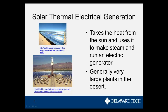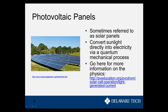Solar thermal power plants are generally only economical to build in the desert. Photovoltaic panels are a little different — they don't involve heat at all. These are probably the most typical solar panels you see, and they convert sunlight directly into electricity through a quantum mechanical process. There's good information on the basic physics at the linked website.